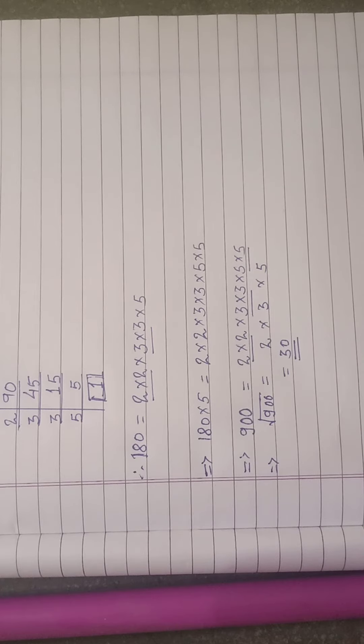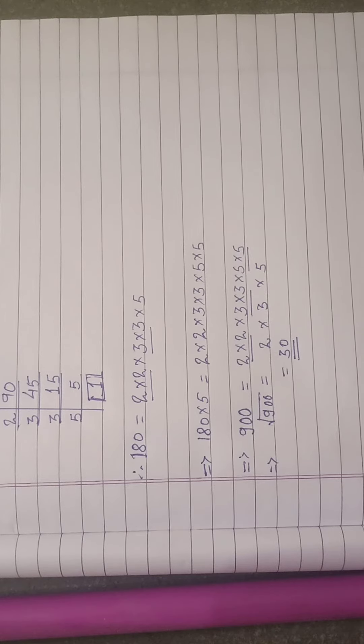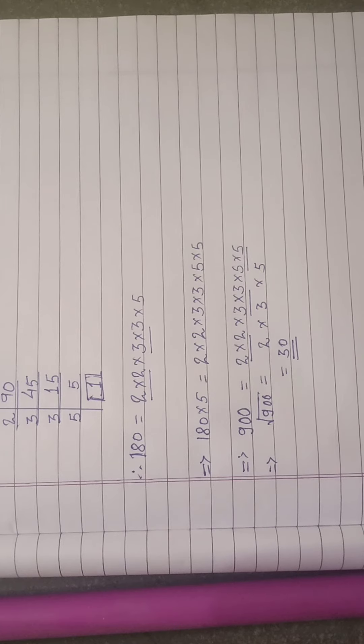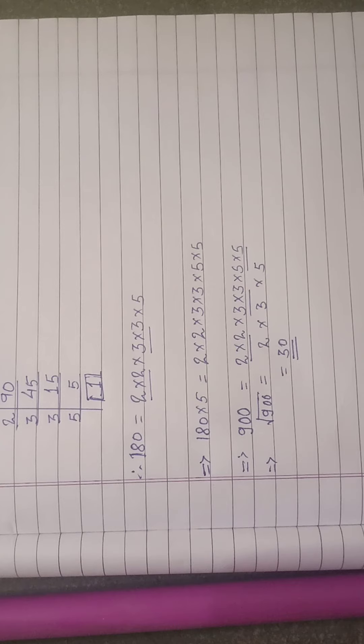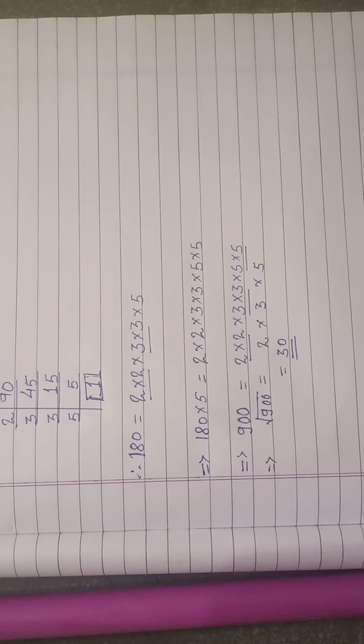So we got 180 into 5 is equal to 2 into 2 into 3 into 3 into 5 into 5. Now you can see on right hand side we have all the factors in the pair, and on left hand side we are having 180 into 5 that is 900. As all the factors are in the pair, 900 must be a perfect square number.